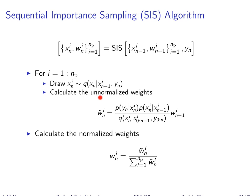You then calculate the unnormalized weights, which are simply the product of the likelihood — and this is where your measurement comes in. That's where measurements affect the weights, not the particles themselves. Particles in unlikely states get a small likelihood and their weights go down; particles where the state is likely have a higher likelihood and those weights don't go down as much. So at this step, the measurement at time n is taken into account and affects the relative weights of each particle.